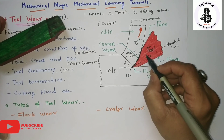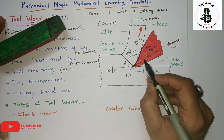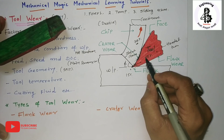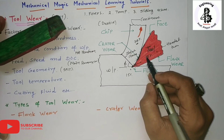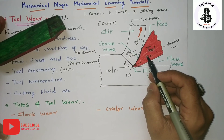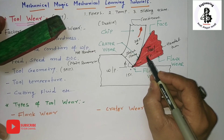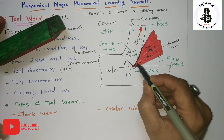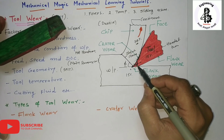Crater wear is most common with ductile materials which produce continuous chips. Crater wear does not always extend to the tool tip but may end at a distance from the tool tip. It increases cutting forces, modifies the tool geometry, and softens the tip of the tool, thereby reducing the different angles.